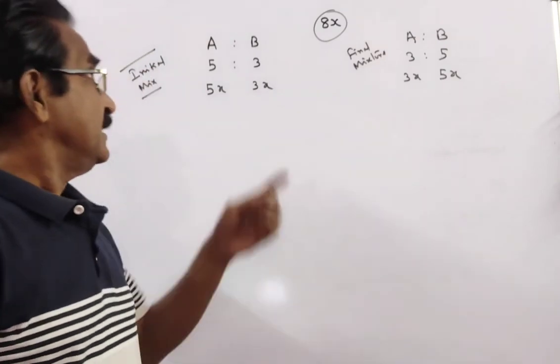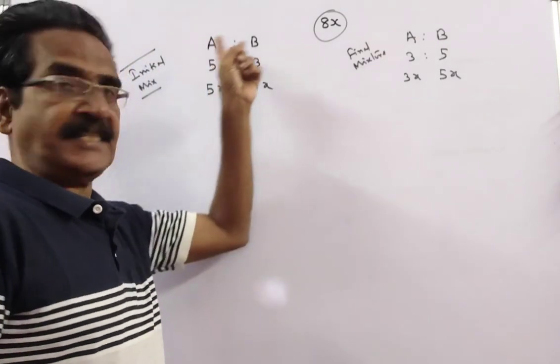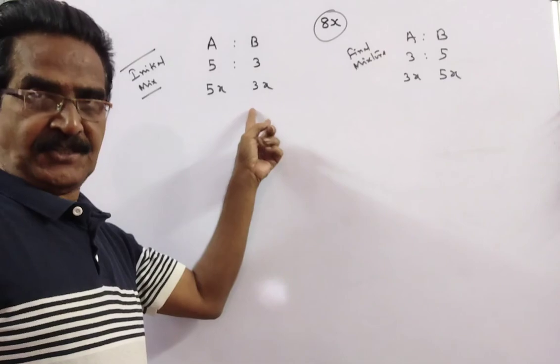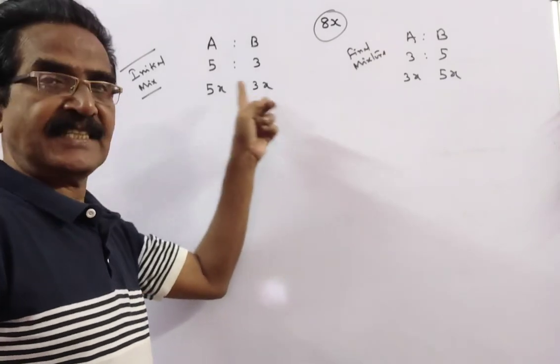See friends, this is the initial position of liquids A and B in the mixture. That is 5x, 3x.